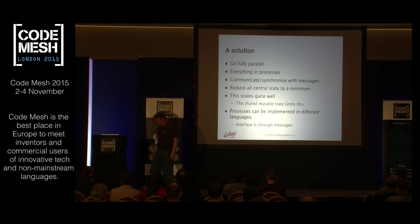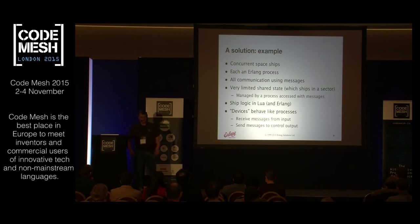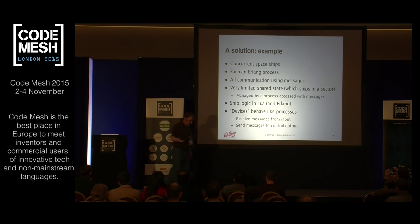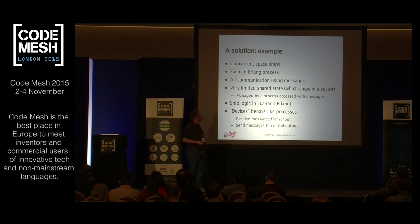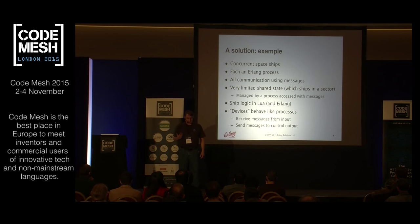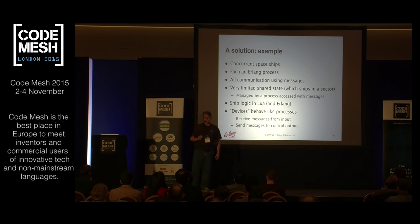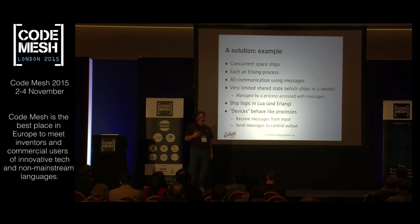Now for a little example — my spaceships. As I said, Brian's are much nicer, but I've got many of them. I'm using Erlang to implement this, though in principle you could do this in basically any language. The example is very simple with very limited shared state: spaceships going around in space, passing through sectors. You can ask a sector which spaceships are in it — that's the only shared state, and it's managed by a process. So I'm accessing shared state by sending requests to a process.